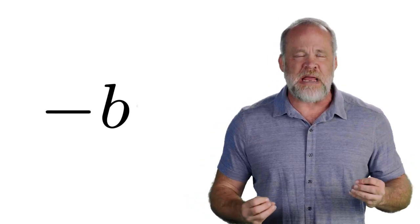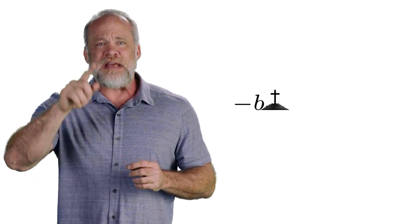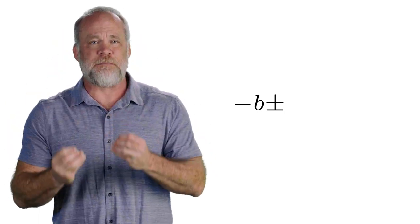This is a negative b and that b flies and he lands on a cross. For this we have plus or minus. The plus sign kind of looks like the cross and the minus sign down below kind of looks like the ground. So if you had a cross stuck in a ground it looks like the plus or minus sign. So you got a negative b flies and he lands on a cross which stands for plus or minus.